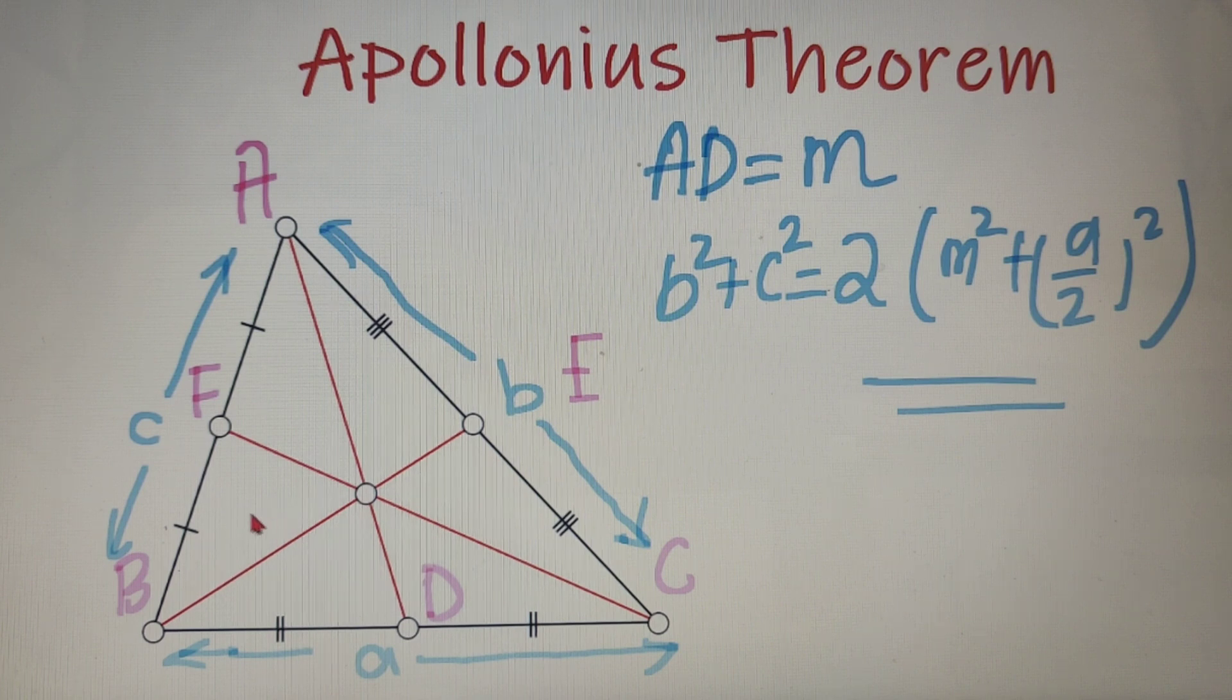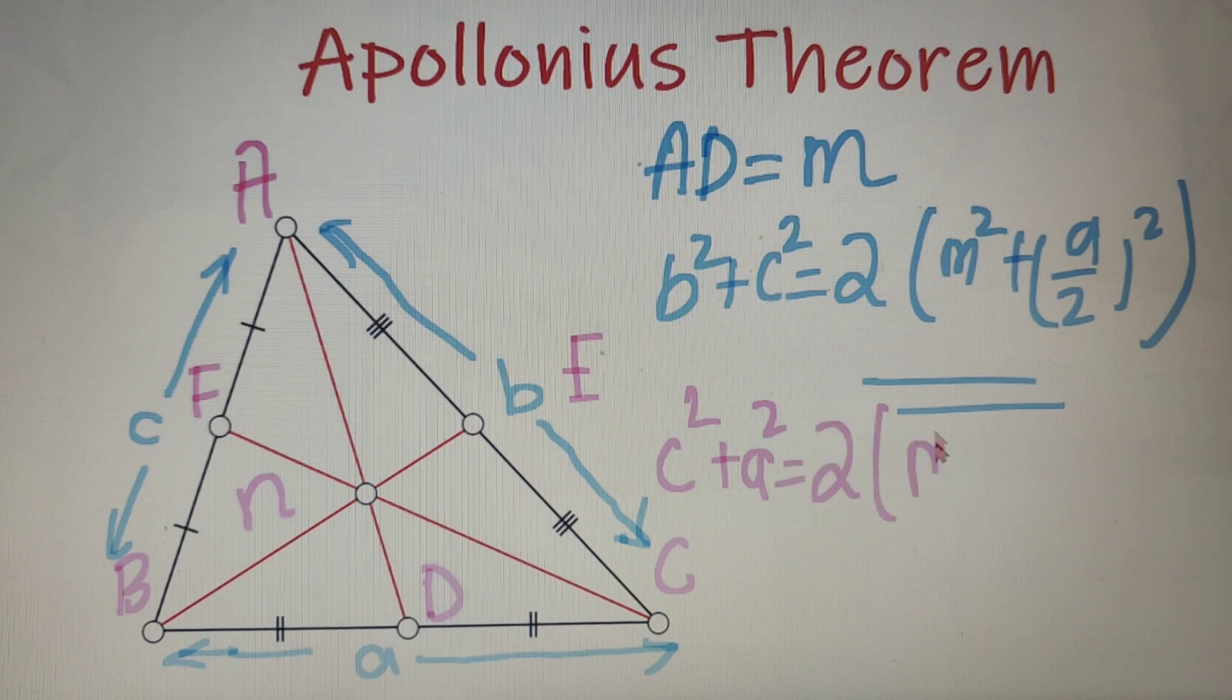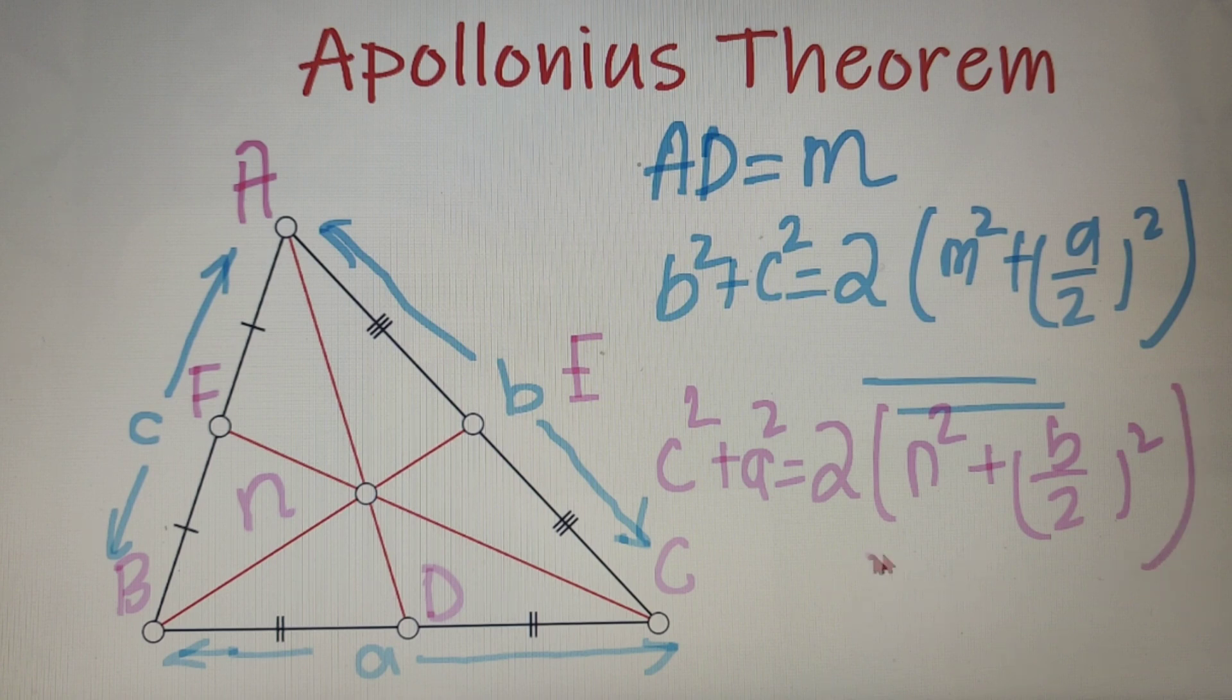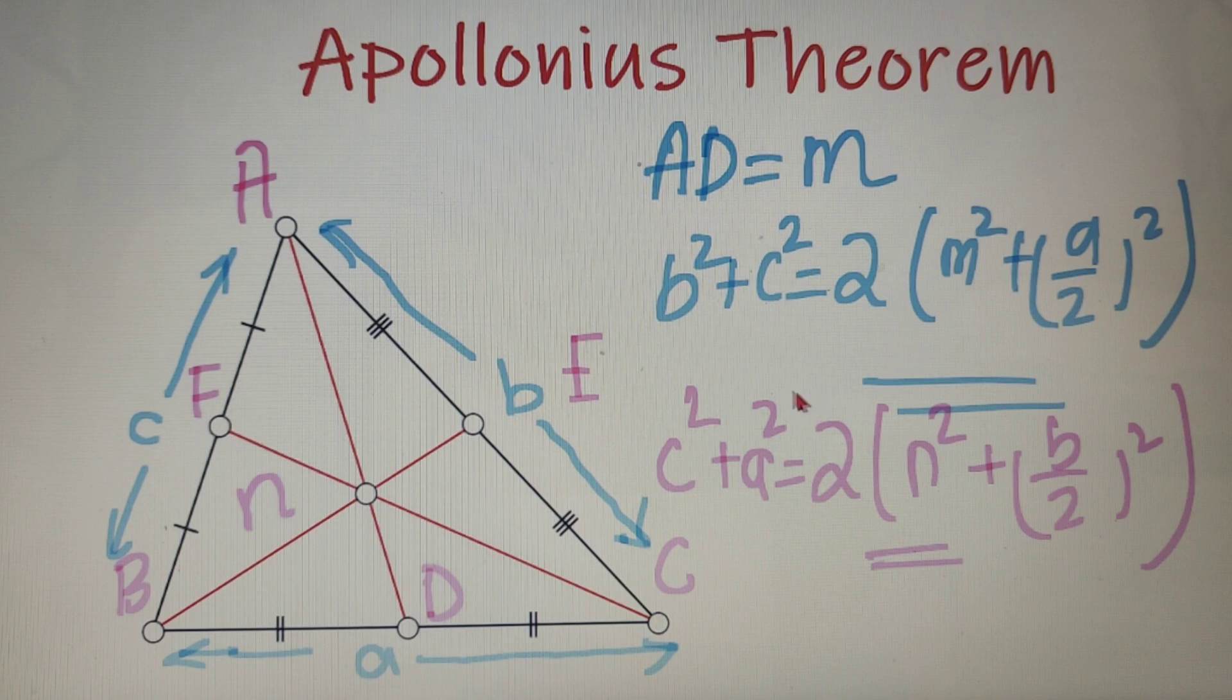So suppose if I take the length of BE as N, then I can say that C square plus A square is equal to twice of N square plus B by 2 whole square. I hope that you are clear with the Apollonius theorem and let's solve a simple problem so that this concept will be more clear to you.